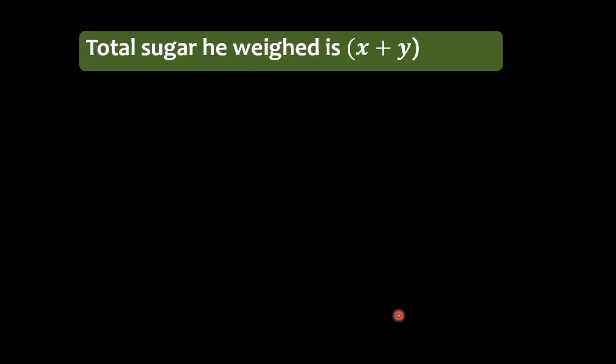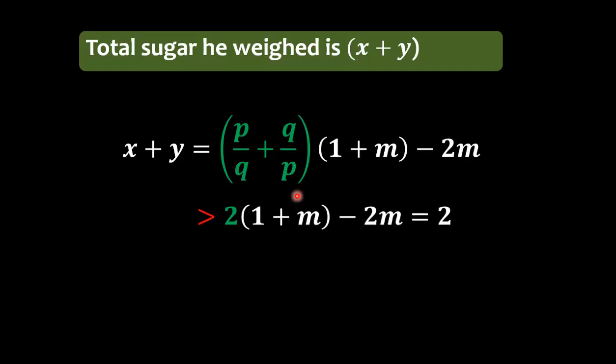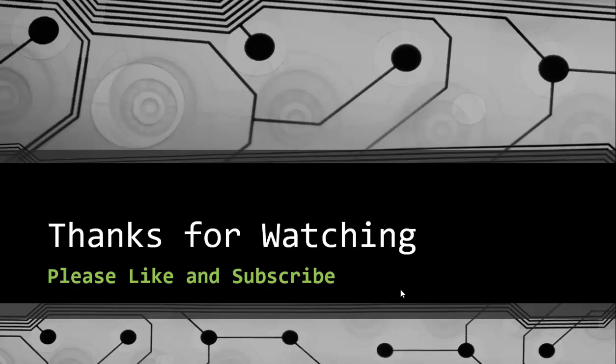That means in this equation, p/q + q/p is greater than 2, and we get x plus y greater than 2. So he is measuring greater than 2 kg of sugar with his faulty scale. That means he is not making any profit with that faulty scale. This completes our proof. See you soon, thanks for watching, and please like and subscribe.